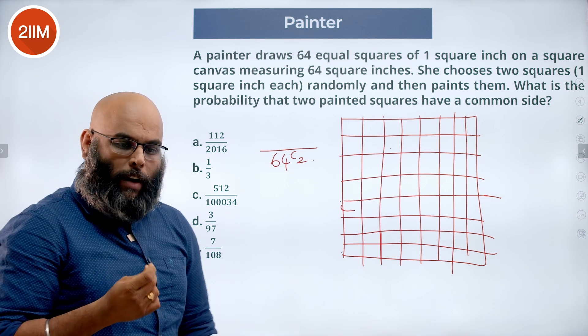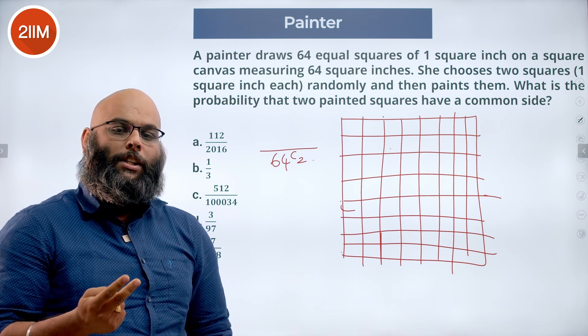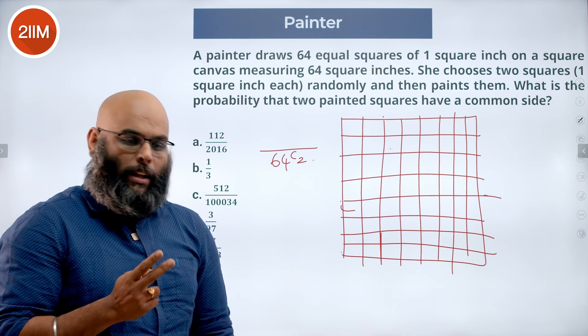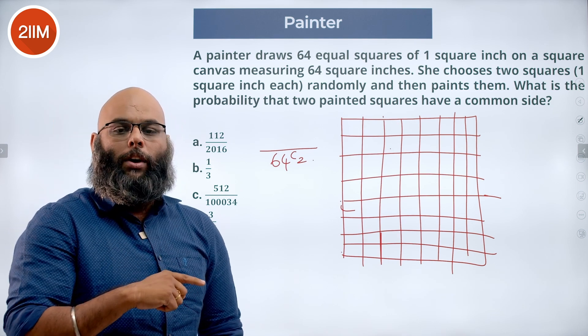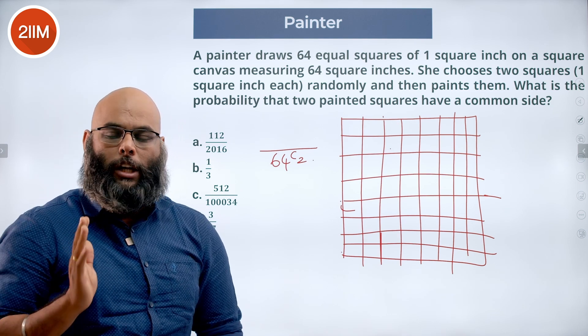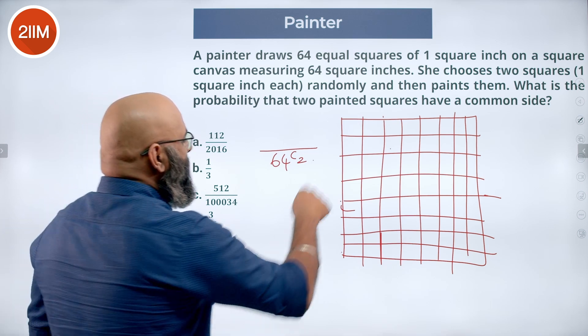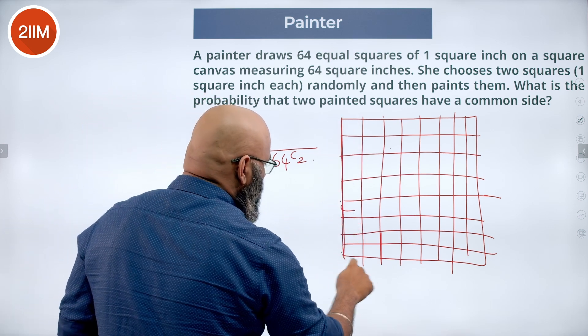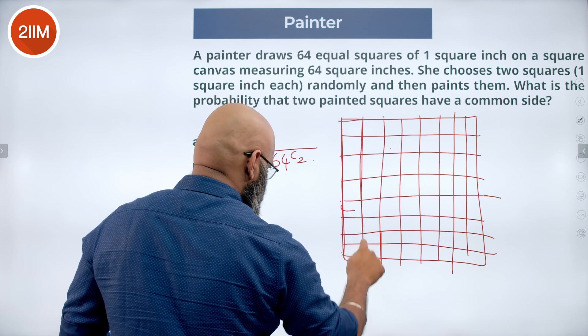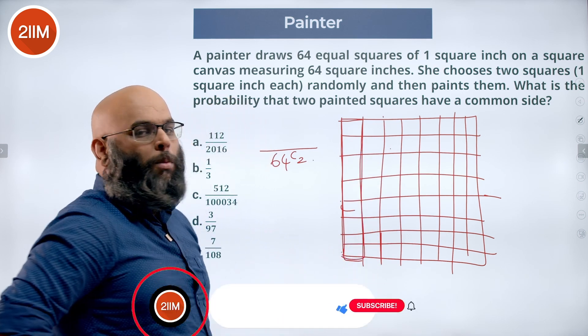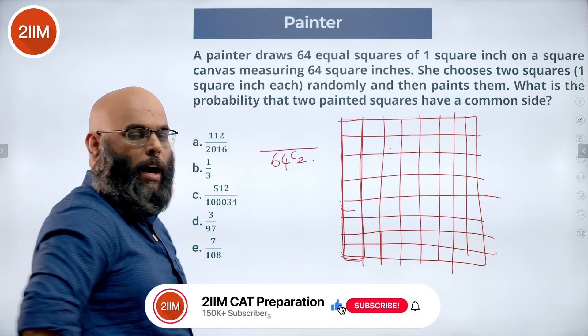Now for me to have any 2 squares to be adjacent to each other or they have a common side, they either have to belong to the same row or they have to belong to the same column. Then only that happens. So let's say take this particular column for instance. Which 2 boxes can definitely have a common side?